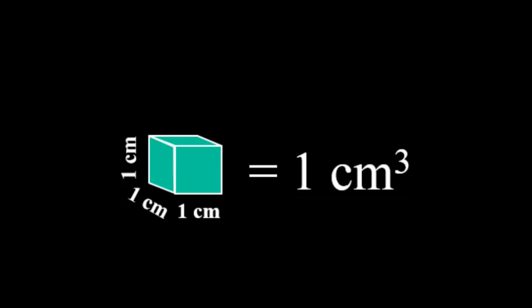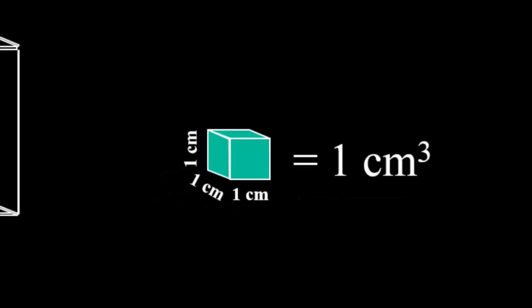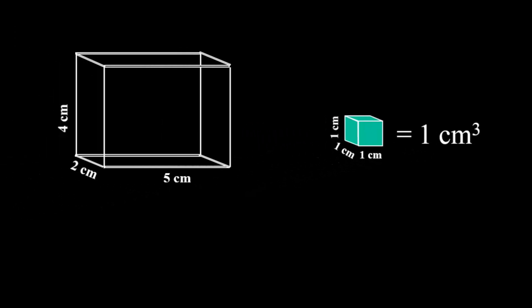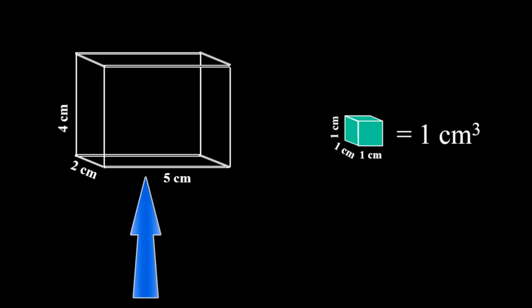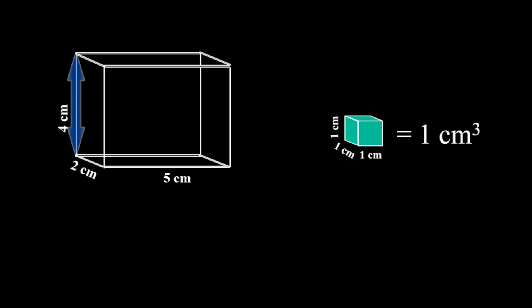We've multiplied one centimeter by itself three times — one centimeter times one centimeter times one centimeter. The same idea applies to the box, where we simply multiply the height times the width times the depth. So the question is: how many of these single cubic centimeters would fill a box with a height of four centimeters, a length of five centimeters, and a width of two centimeters? Let's take a look.